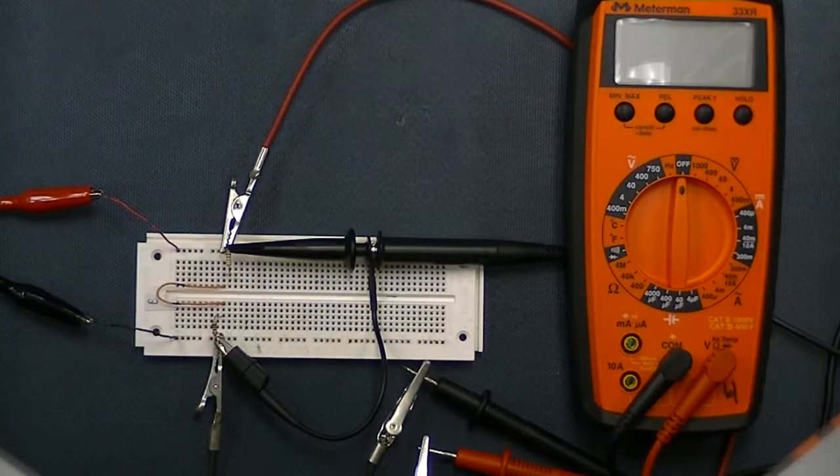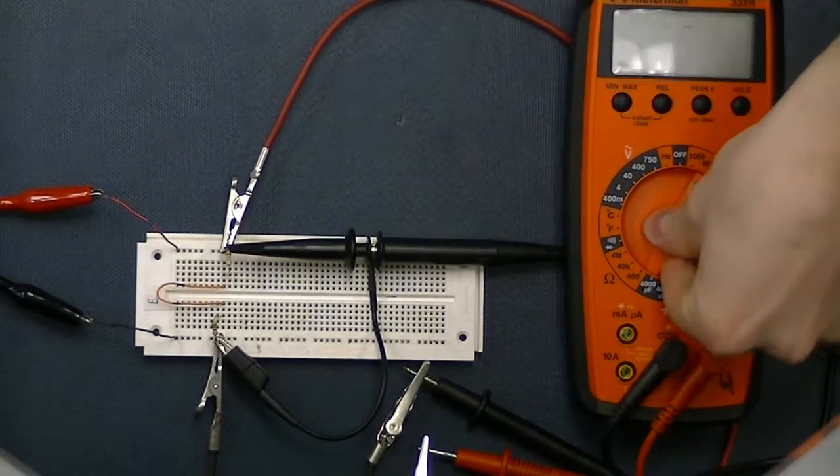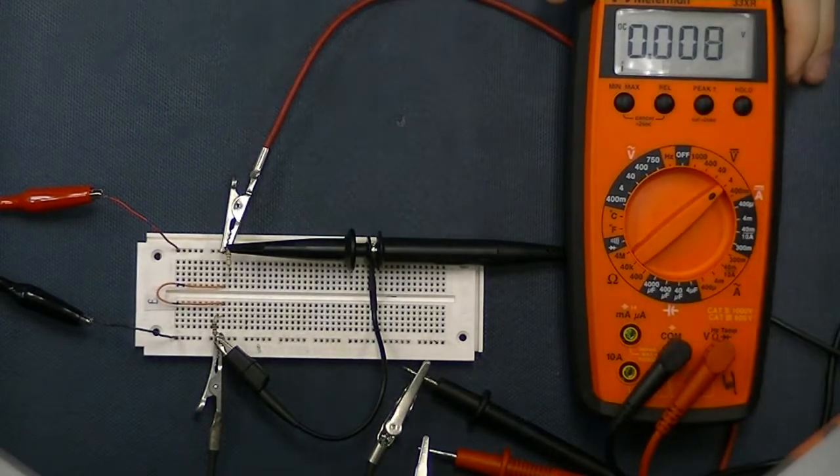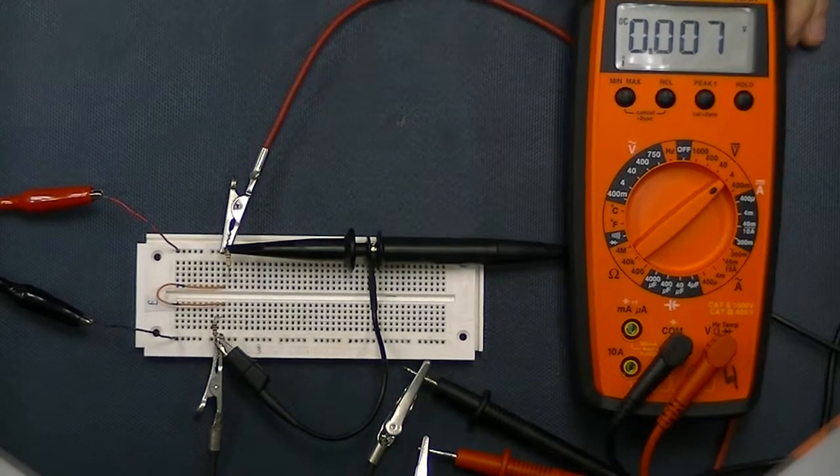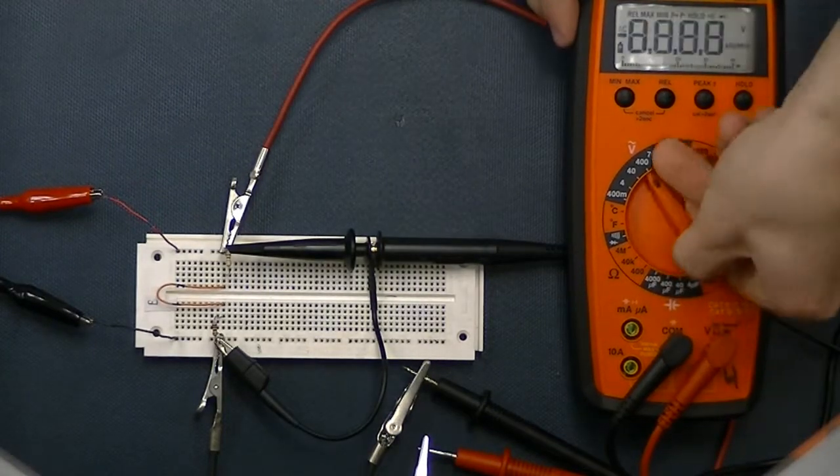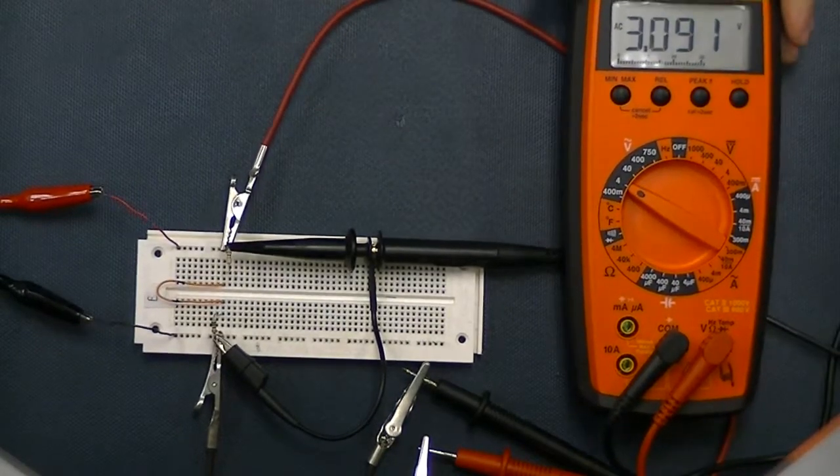Alright, so back to our circuit. Here we have the digital multimeter hooked up. If we switch it to DC, we can read that it will be down to zero or approximately zero. And if we switch it to AC, we're going to have the RMS value of the voltage coming through.